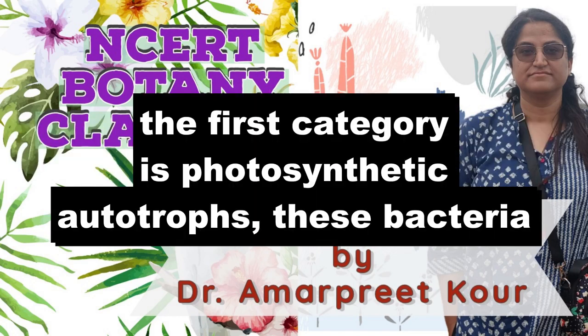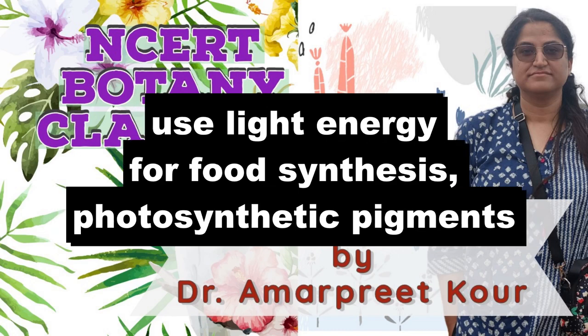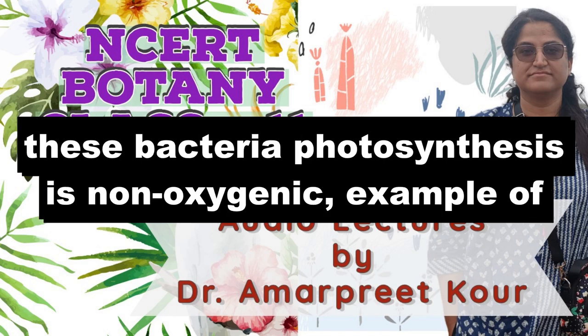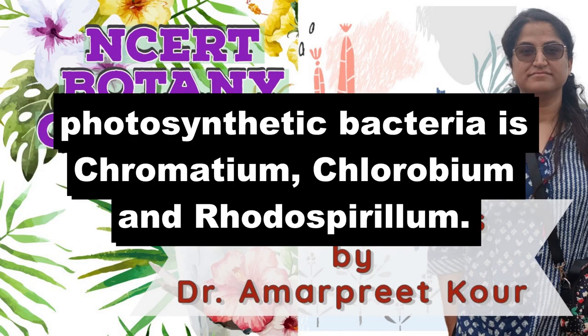The first category is photosynthetic autotrophs. These bacteria use light energy for food synthesis. Photosynthetic pigments are present in the cytoplasm for photosynthesis. In these bacteria, photosynthesis is non-oxygenic. Examples of photosynthetic bacteria are Chromatium, Chlorobium, and Rhodospirillum.